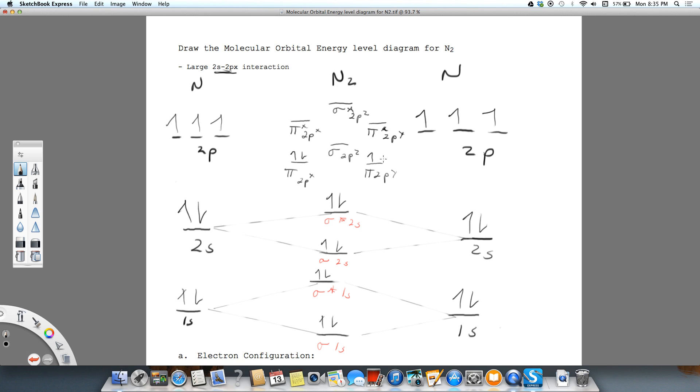So my pi, the 2px and 2py fill up first. And then we're going to go to our sigma 2pz. And you'll notice that that takes care of all 6 electrons.